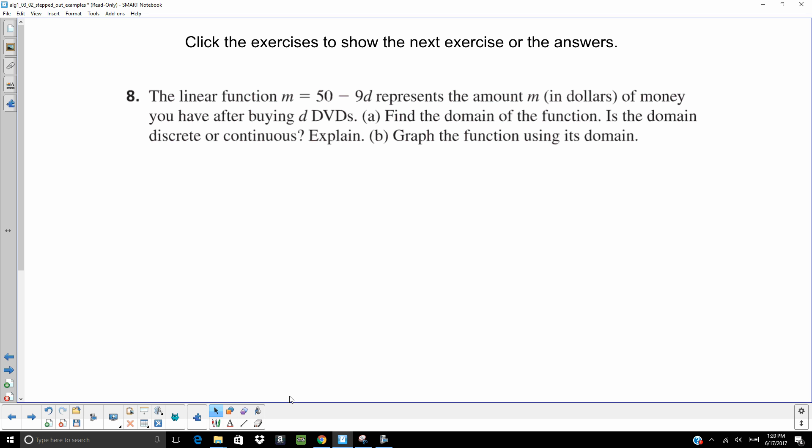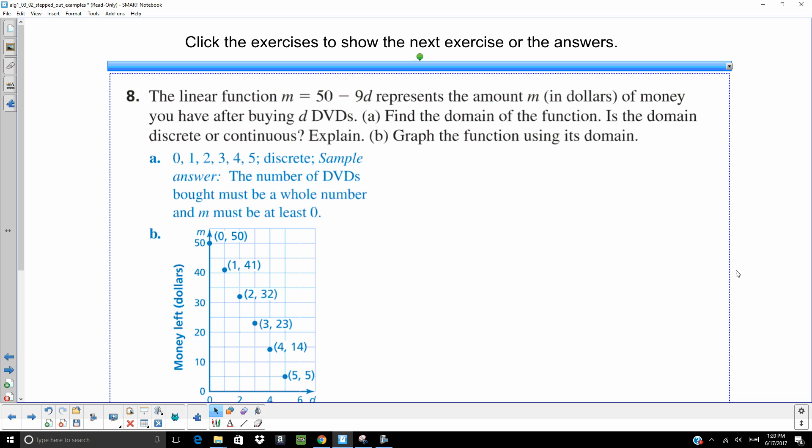Take a second, hit pause, try this one on your own. When you think you've got the answer, hit play. Okay. On this one, it's discrete because the number of DVDs must be a whole number. Same thing. You can't buy part of a DVD.